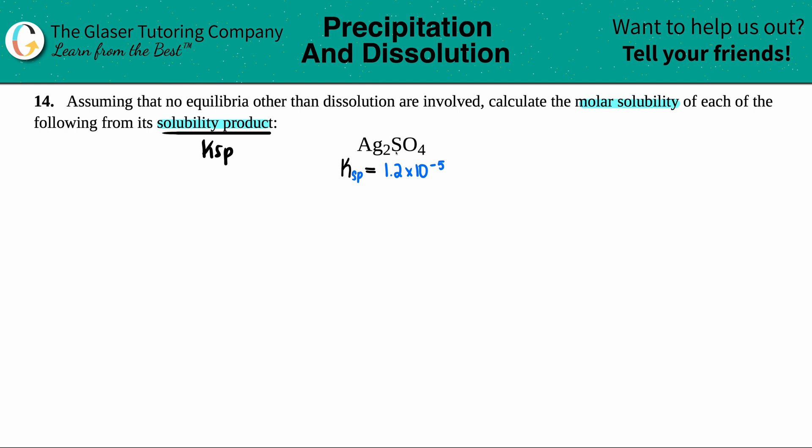But what is a KSP without a balanced equation? It's nothing. So we have to write the balanced equation for what's going to happen when Ag2SO4 dissociates, right, into its ions. Now, if it's going to do that, it starts off as a solid. And all KSP ionic compounds that you start with, those are always going to be solids.